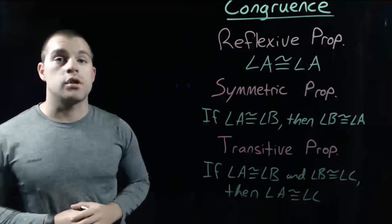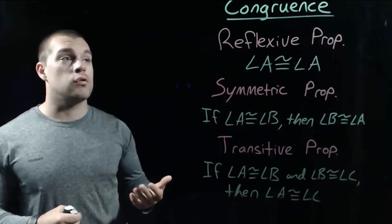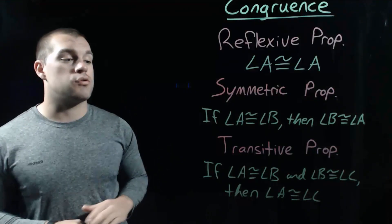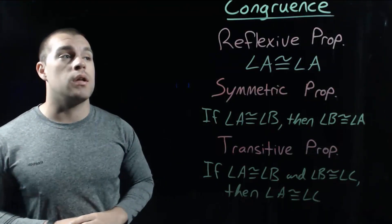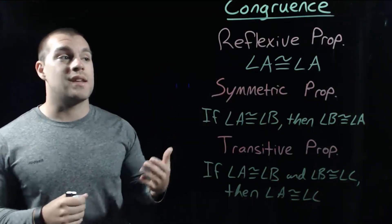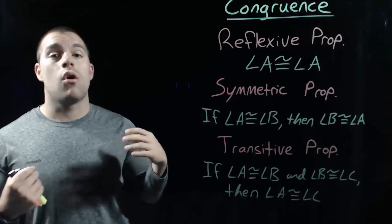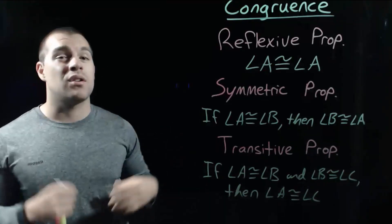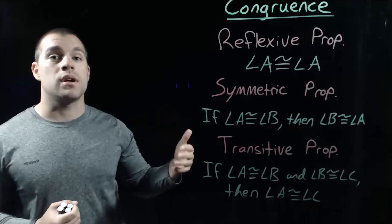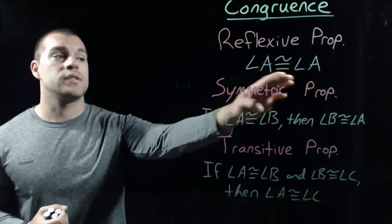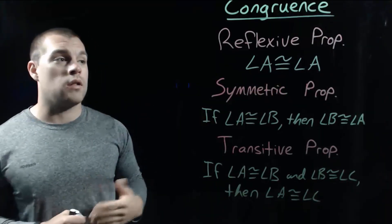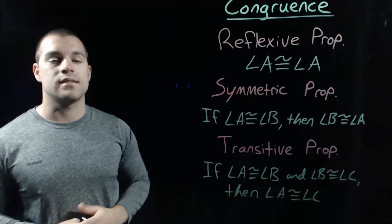The last thing I want to mention are some properties of congruence. We've got the reflexive property, the symmetric property, and the transitive property. The reflexive property says that whether we've got an angle, a segment, or some geometric figure, it is going to be congruent to itself. So in this example, angle A is congruent to angle A — it has to be the same size as itself.